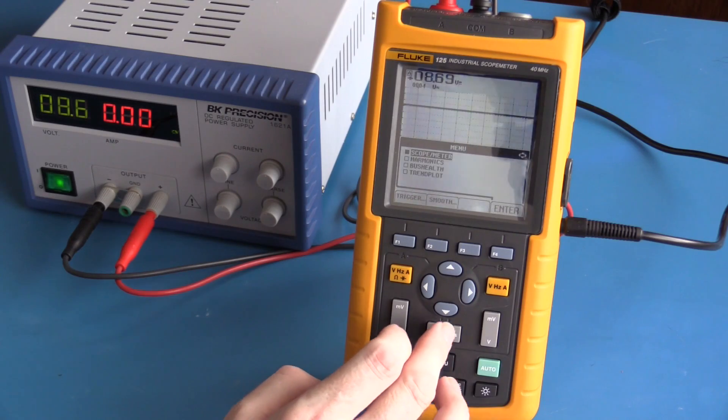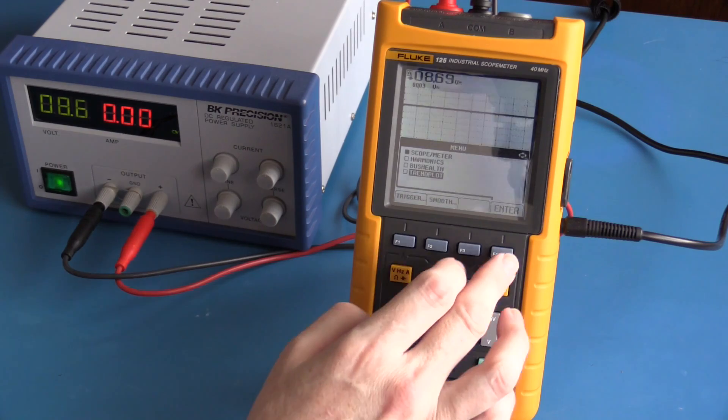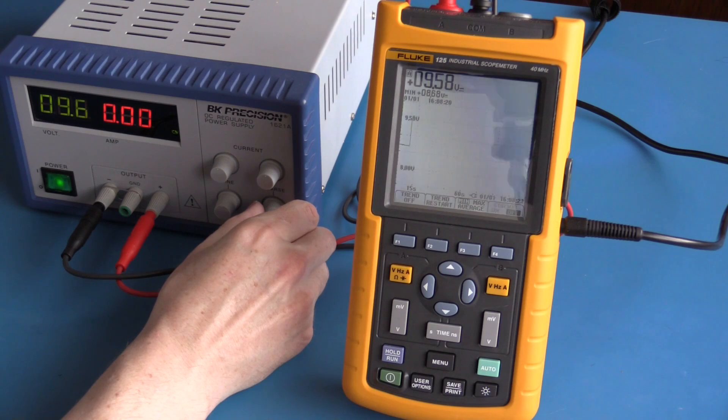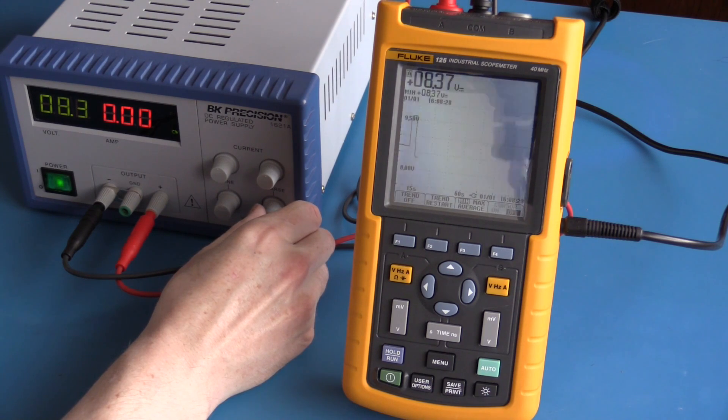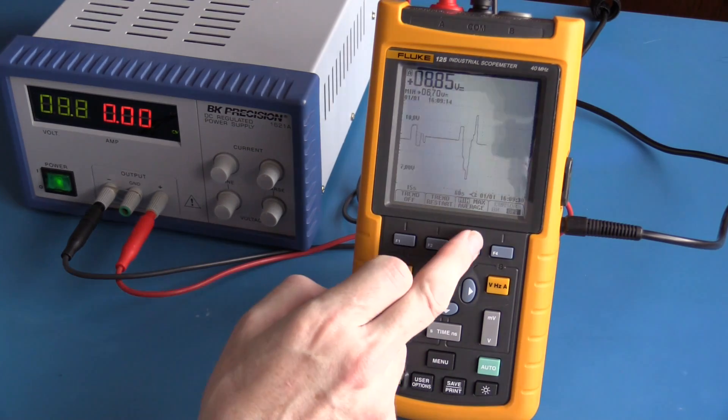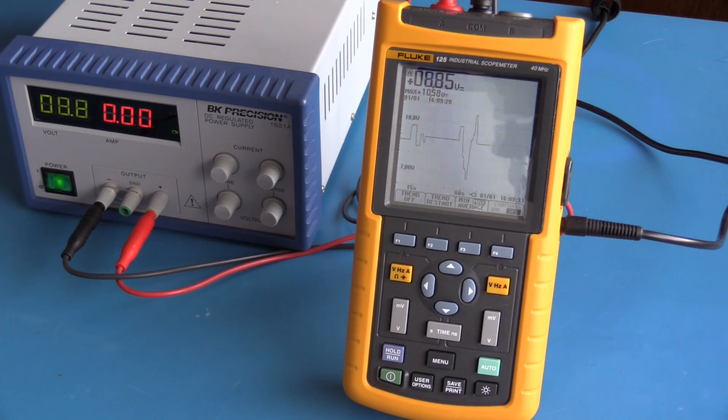Trend plot is very useful if you would like to plot changes over time. As we can see the meter is following the changes, so average is now 8.8, minimum 6.7, and the maximum was 10.5.